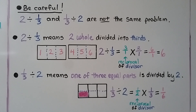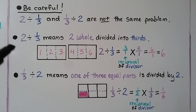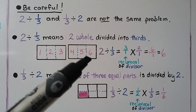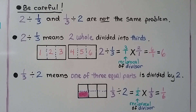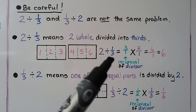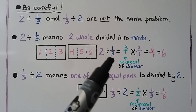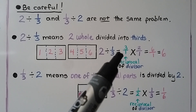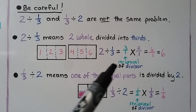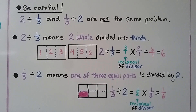You need to be very careful and pay attention to the equations. 2 divided by 1 third and 1 third divided by 2 are not the same problem. 2 divided by 1 third means we have 2 whole divided into thirds — we have 6 pieces. We can solve by multiplying by the reciprocal of the divisor 1 third, which is 3 over 1. 3 times 2 is 6, and 1 times 1 is 1, which simplifies to 6 whole.